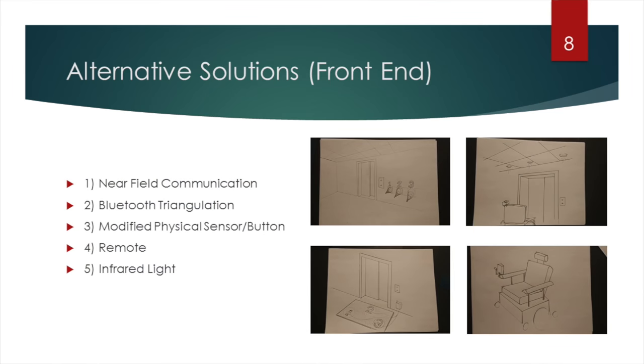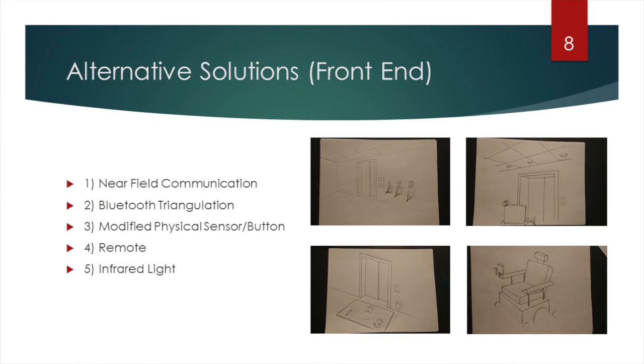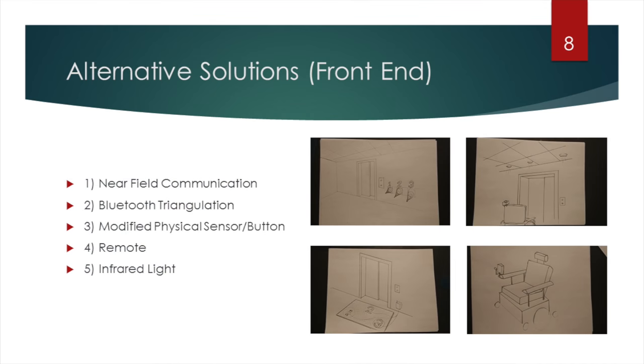For the front-end, we had five solutions. Near-field communication required a mat on the ground - a tripping hazard that also stops chairs and trolleys. Bluetooth triangulation was very inaccurate and costly for location tracking. A modified physical button or sensor was discounted because it would impede able-bodied users. A remote control was considered, but not all users have one and custom-building for each chair is complicated. The solution we chose was an infrared light solution.